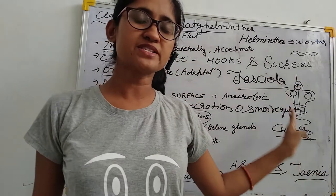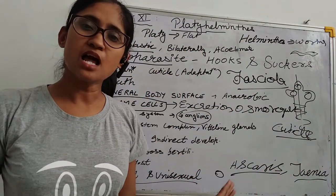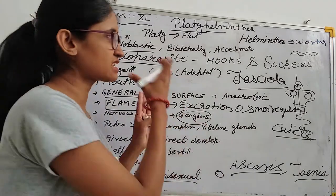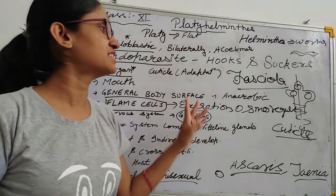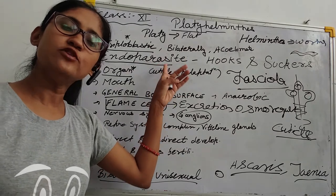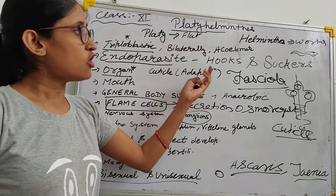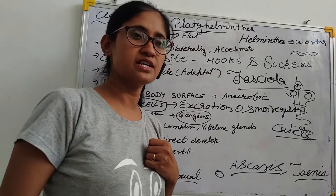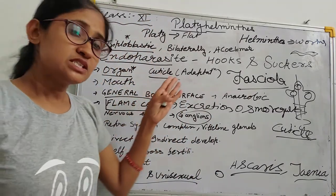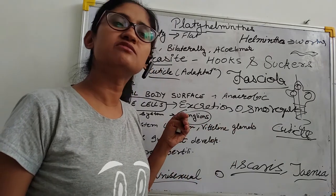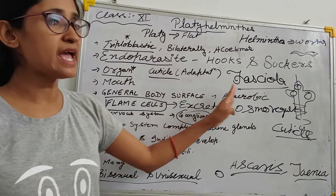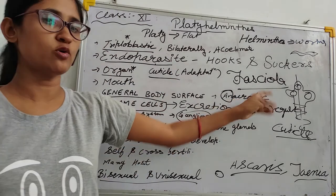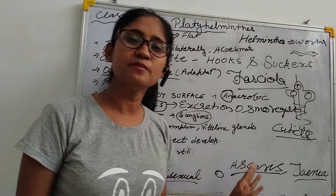Let's look at some important points: Platyhelminthes are flatworms — their body is flat. They are triploblastic with organ level body organization. They are bilaterally symmetrical, acoelomate — no true coelom. Flame cells are present. They are endoparasites with hooks and suckers for nutrition. Cuticle is present for protection from digestive juices. Respiration occurs through the general body surface and is anaerobic. Flame cells help with excretion and osmoregulation.